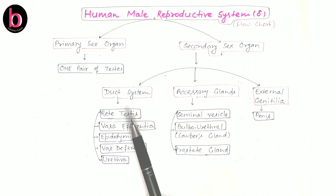Under the duct system, we have to discuss five structures: rete testis, vas efferentia, epididymis, vas deferens, and urethra. Under accessory glands, we have to discuss seminal vesicle, bulbourethral gland (also known as Cowper's gland), and prostate gland. Under external genitalia, we have to discuss the penis.